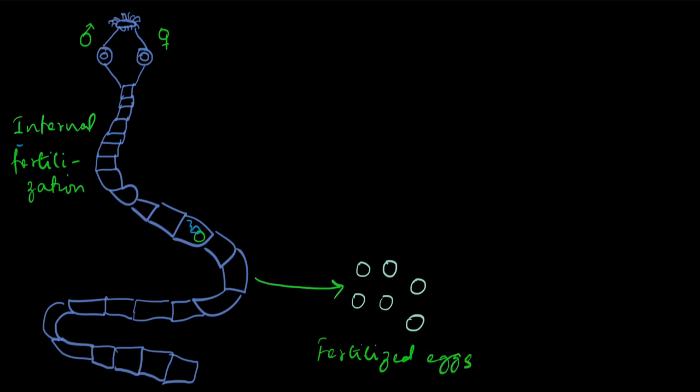And all these animals have one or more larval stages. So this is the larva. There can be more than one. So one or more larval stages.